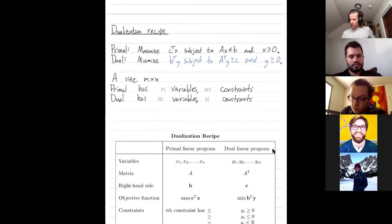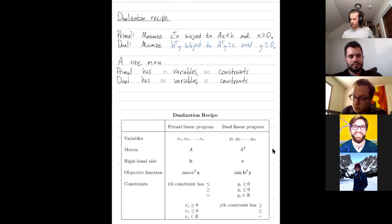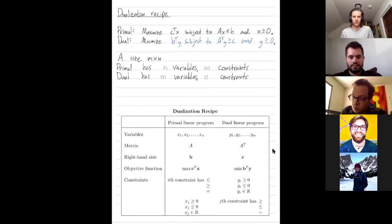Okay, so here's the recipe from our book, Matthew Second Gardner. Our primal problem has n variables, our dual problem has m. The matrix goes from a to a transpose, just as we saw in this particular example.